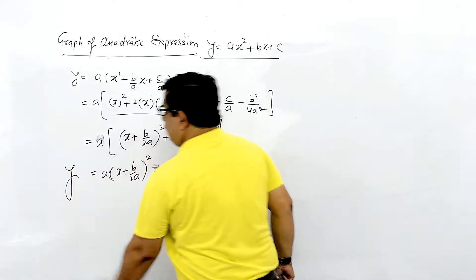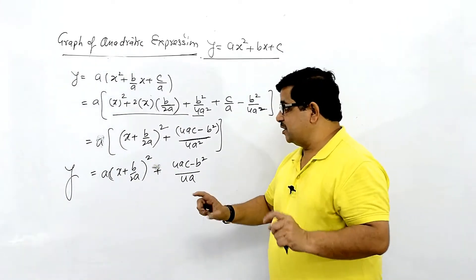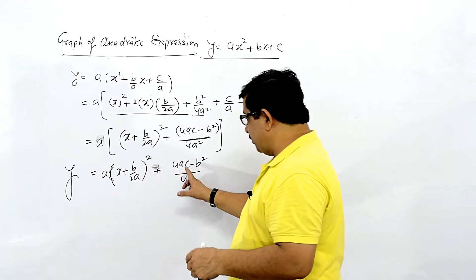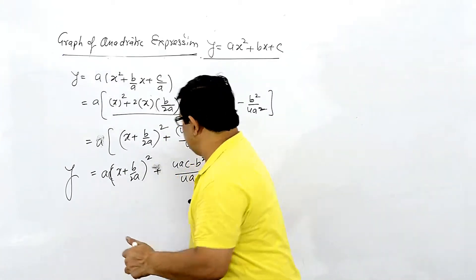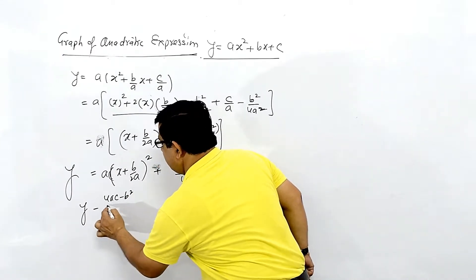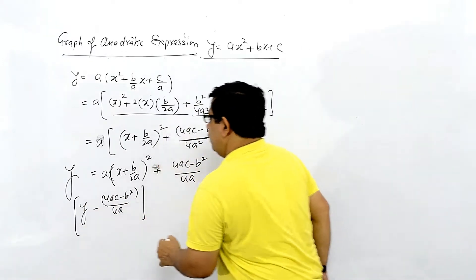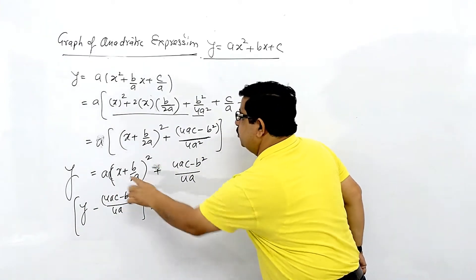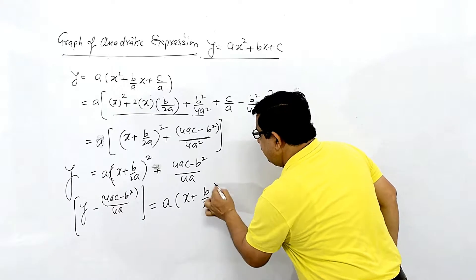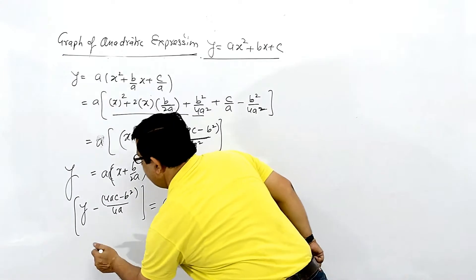Now we concentrate on the shifting concept. According to this, we get: y minus (4ac - b²)/4a equals a into (x + b/2a)². We multiply this out: a into (x + b/2a), repeated to confirm the shifted form.